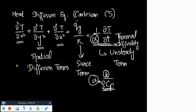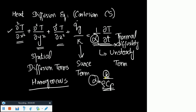We assumed a generalized infinite control volume and derived this conduction equation. The only assumption taken was that the material is homogeneous — that is, conductivity k is simply a constant, not a function of x, y, or z. Now we need to solve this equation.